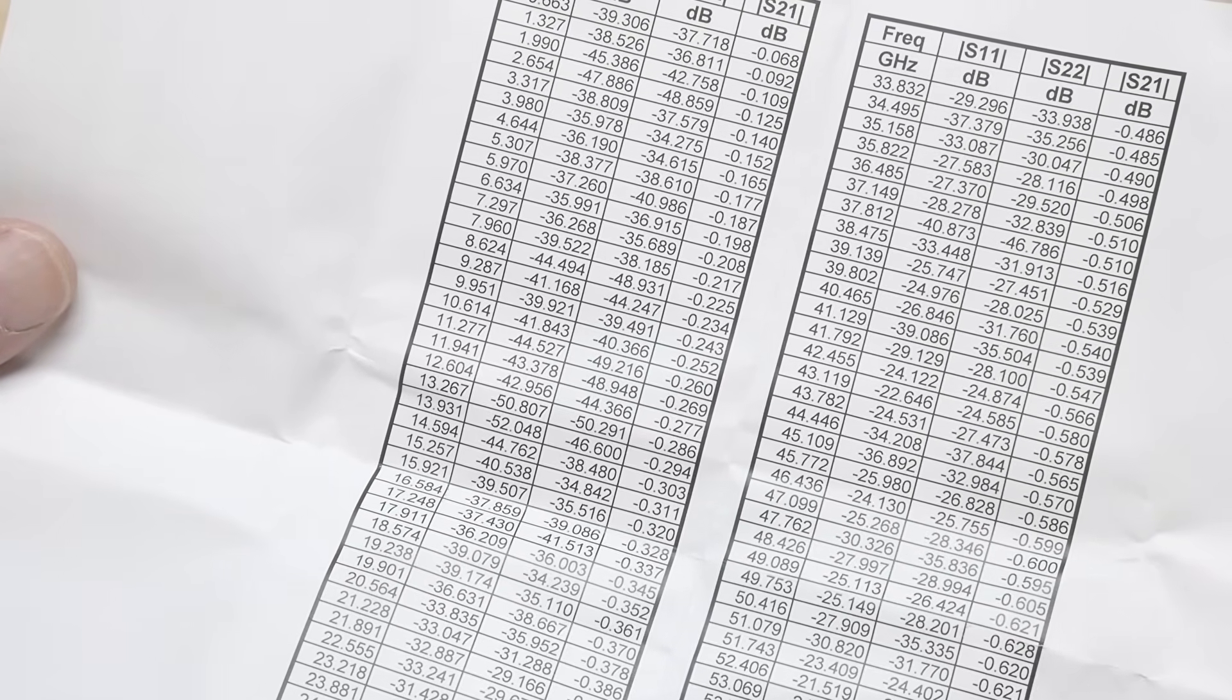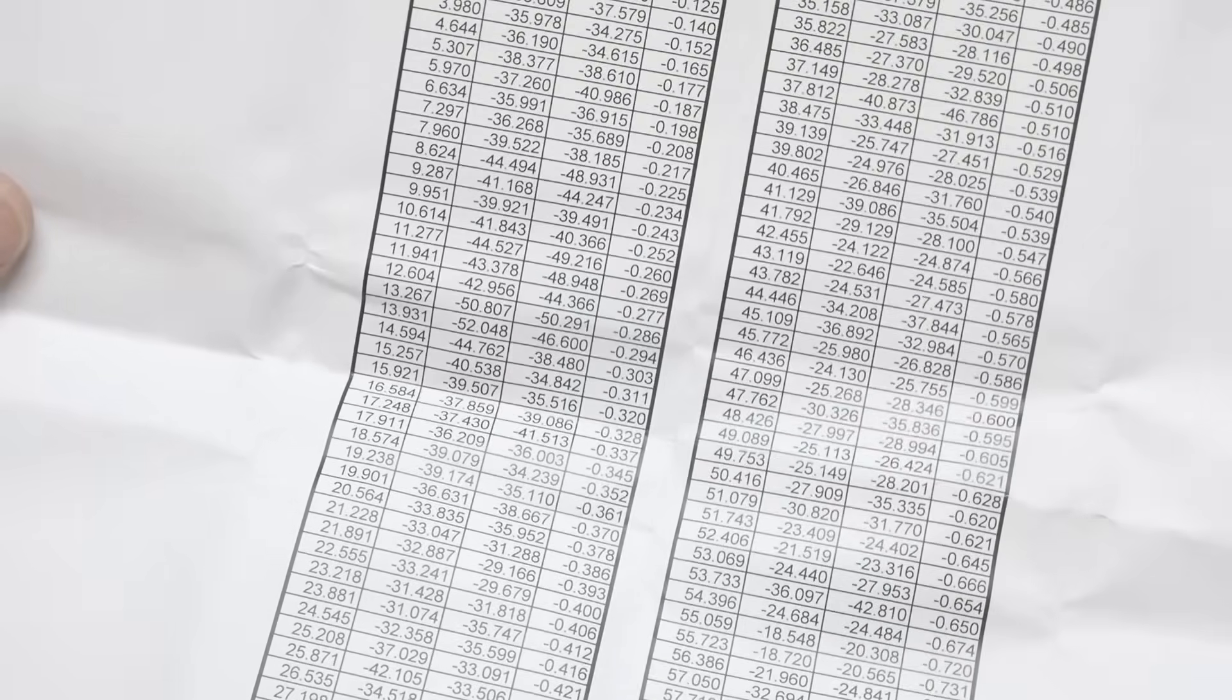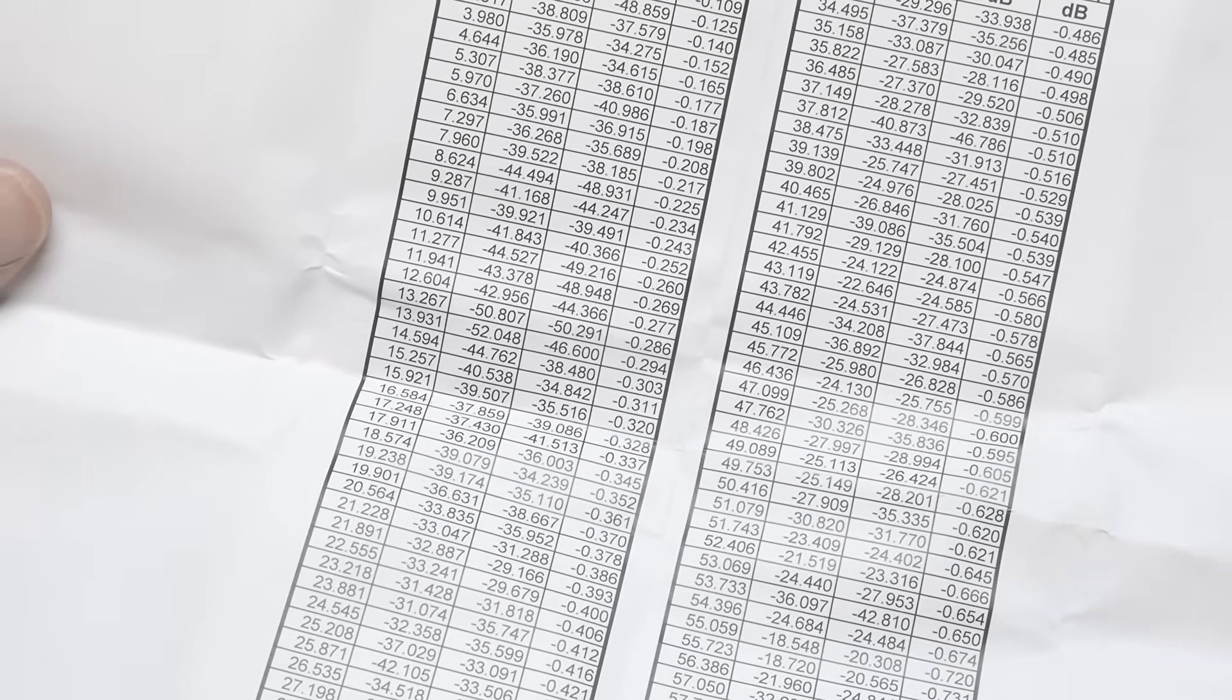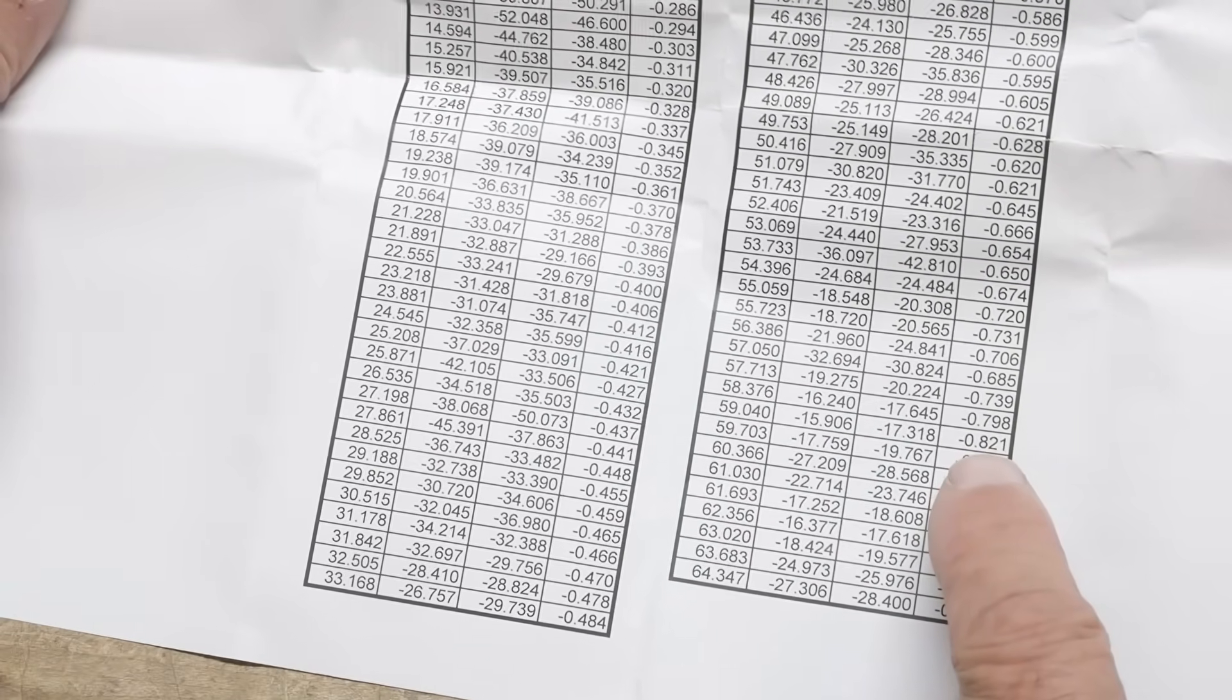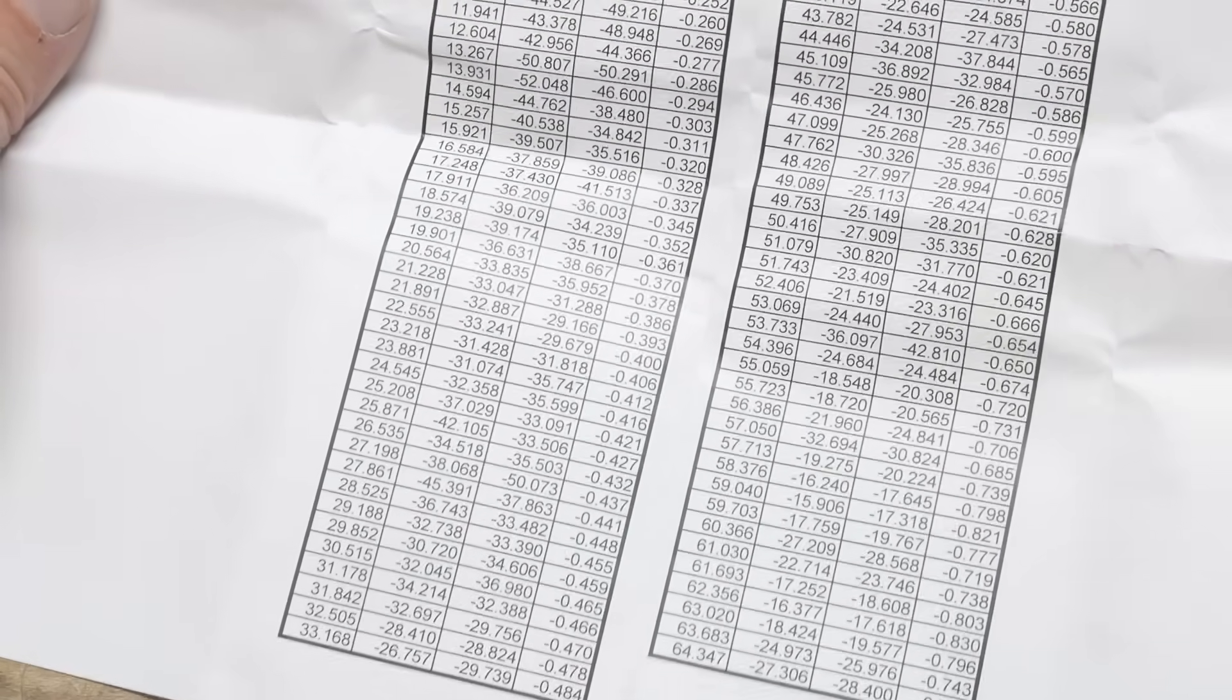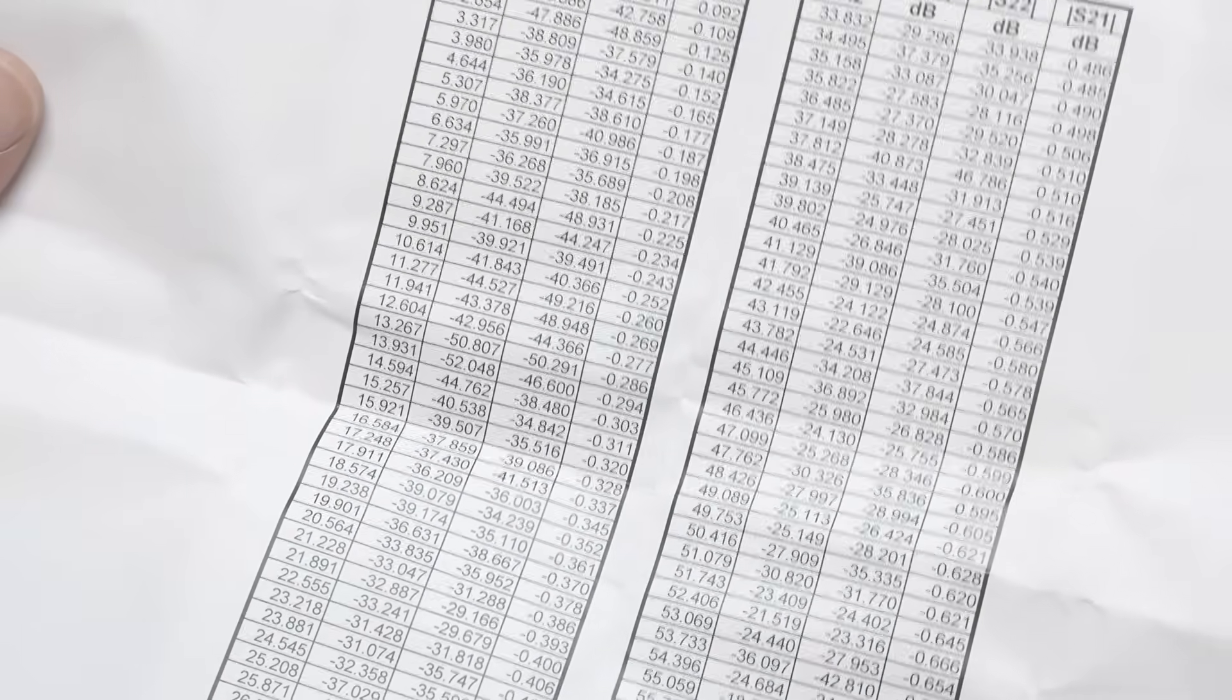This is the printout, so we can look at the individual numbers here. S21 worst case is -0.82, so 0.82 dB loss at worst case. And yeah, most of the time it's around 0.5, 0.6.